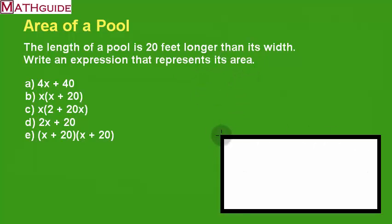In order to do that, we have to write expressions that represent its width and length. Here we have the width, usually the shortest side. We're going to call that X.